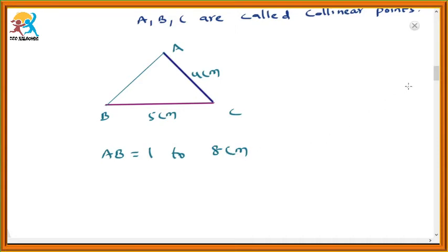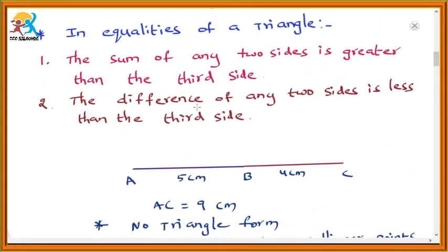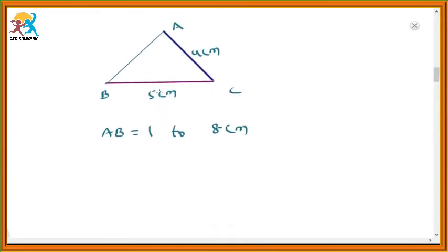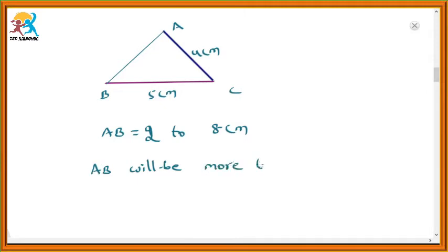But we have one more condition: the difference of any two sides is less than the third side. The difference between these two sides is 1 centimeter, so definitely side AB should be more than 1 centimeter. It should be more than 1 — let us take 2 centimeters. So AB will be more than 1 centimeter and less than 9 centimeters. With these measures only, this triangle will be formed. These two are the inequalities.